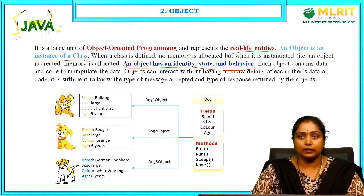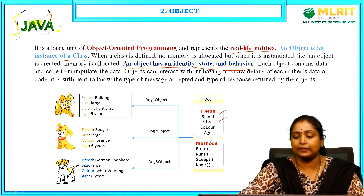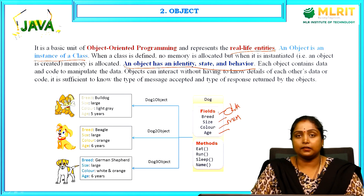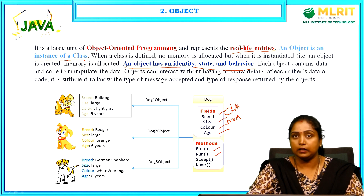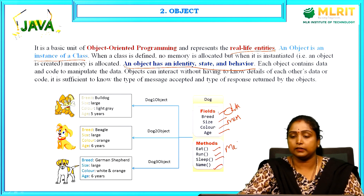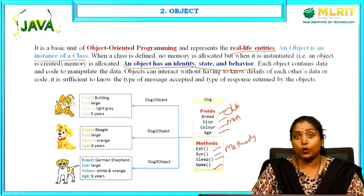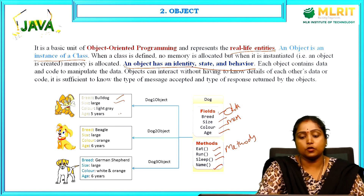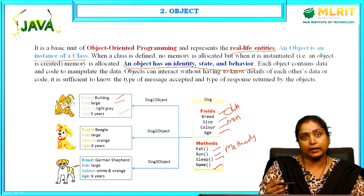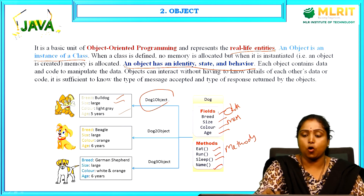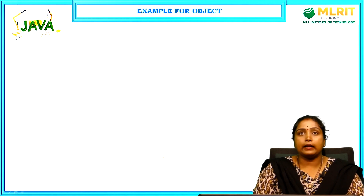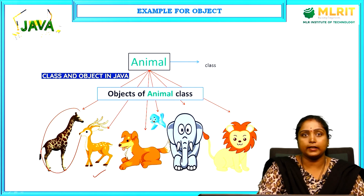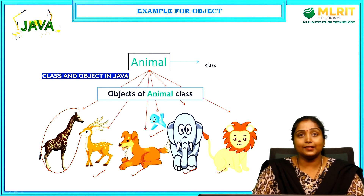As seen in the class example: a dog has breed, size, color, and age as data members. The methods or behaviors of a dog are eat, run, sleep, and name. The objects would be different types of dogs — for example, a bulldog with a particular size, light gray color, and a specific age. So three different breeds of dogs act as three different objects. Another example: animal is a basic class, and types of animals — giraffe, deer, dog, elephant, bird — are objects of that animal class.